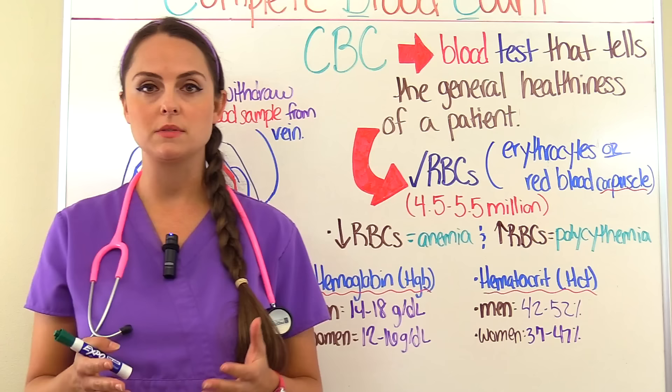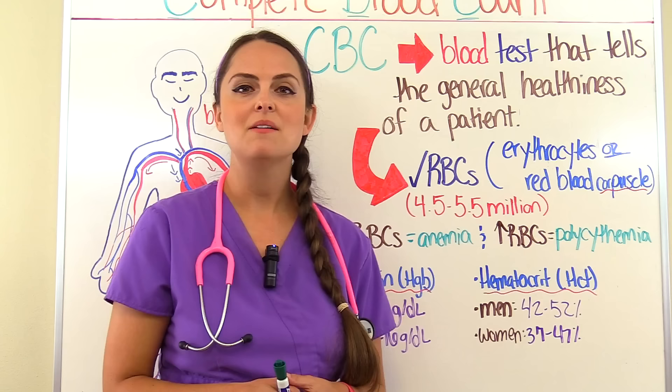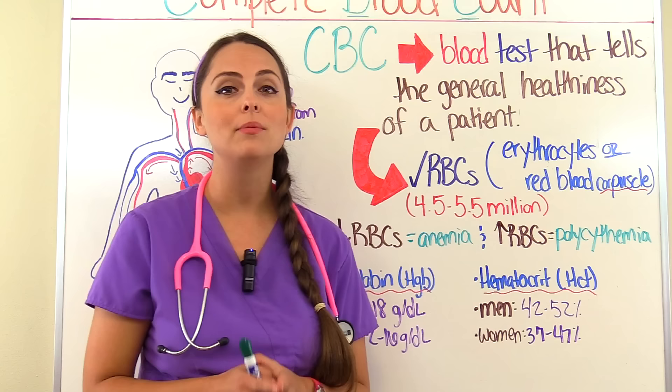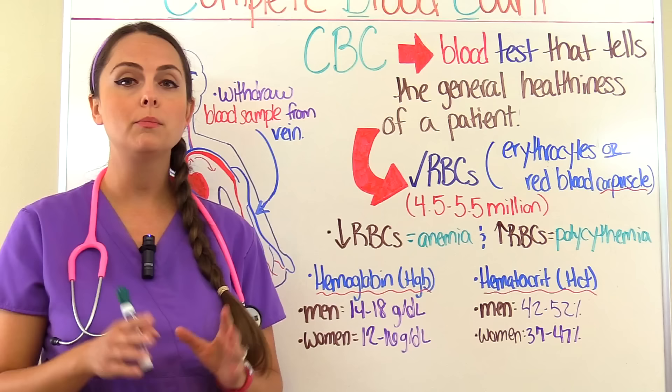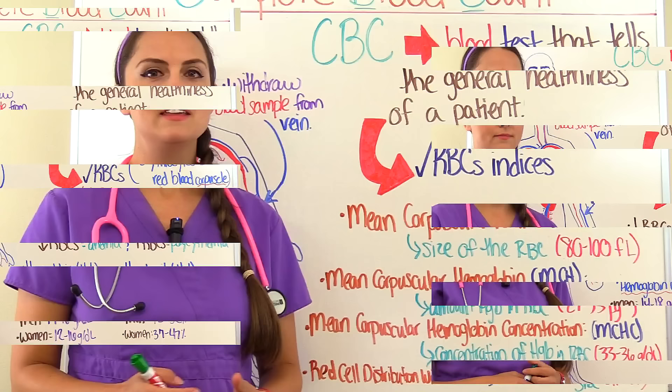Then we have the hematocrit, abbreviated as HCT. This is the amount of red blood cells compared to the total blood volume, and again it differs for male and female. For men it's about 42 to 52 percent, and for women it's 37 to 47 percent.